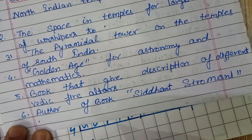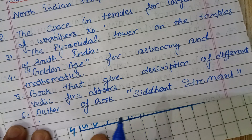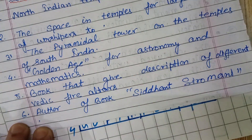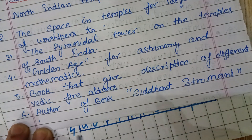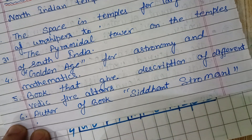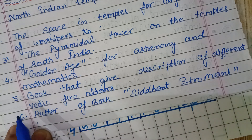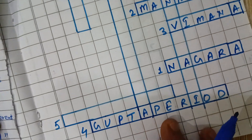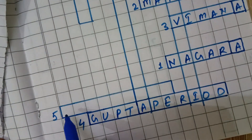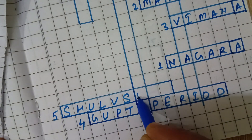Next, fifth question: Which book gives a description of different Vedic fire altars? The book is the Shulba Sutra, placed at number five. The answer is Shulba Sutra.